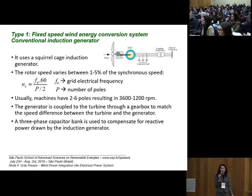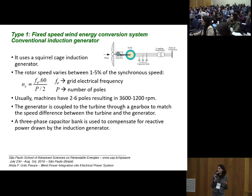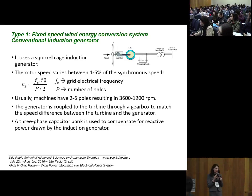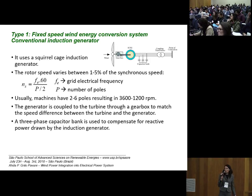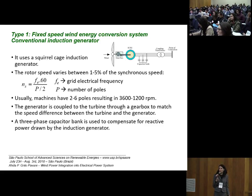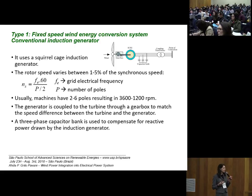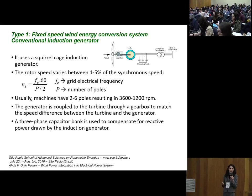The synchronous speed depends on the number of poles and the electrical frequency of the machine, as shown in this equation. Squirrel cage induction machines typically have 2 to 6 poles, resulting in a rotary speed of 3600 to 1200 RPM. The generator is coupled to the turbine through a gearbox to match the speed difference. Because the induction generator consumes reactive power, a capacitor bank is connected at the output to improve the power factor.